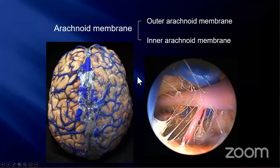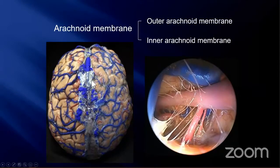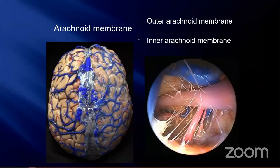There are two types of arachnoid membranes: the outer arachnoid and inner arachnoid membranes. The outer arachnoid membrane is thick and covers the whole brain. Inside the cistern there are numerous trabeculae, which support arteries, veins and nerves. In some areas, numerous trabeculae form the inner arachnoid membranes.